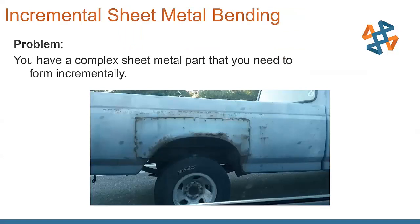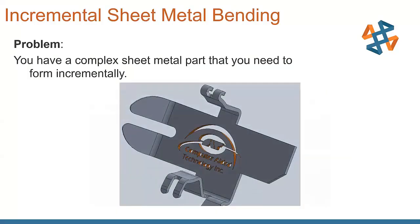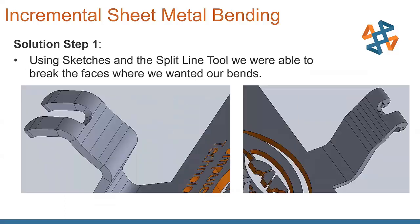Next one that we're going to look at here is incremental sheet metal belt bending. You have a complex sheet metal part that you need to form incrementally. We're going to skip over the rusted out fender, and this is going to be our actual part that we're going to flatten out. You can see it's got some pretty complex forms and bends to it, and we're obviously going to need to hit this in multiple steps in order to get this to form properly.